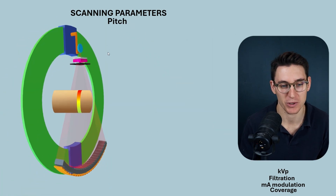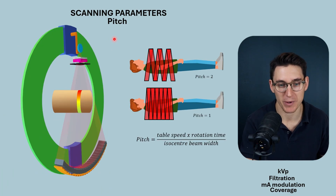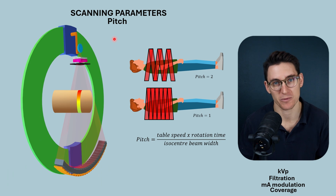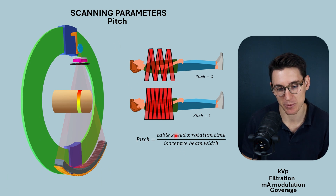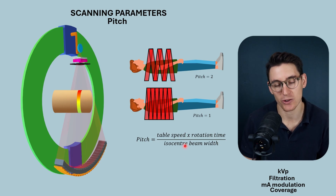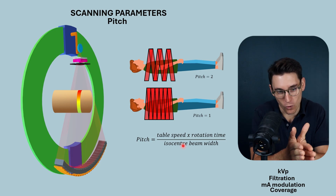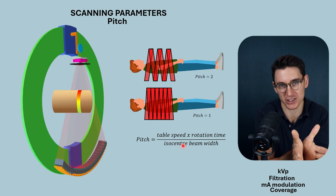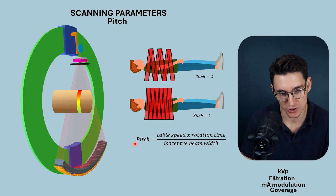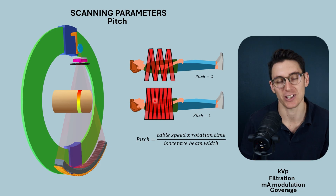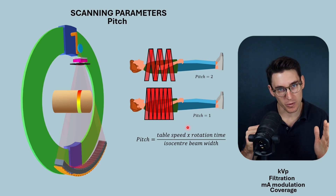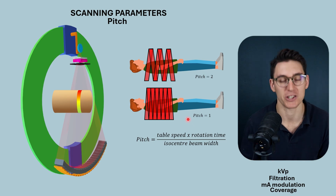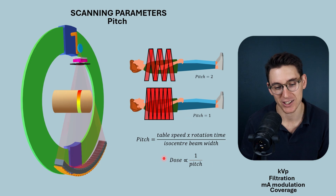Next, we're going to look at pitch, which we covered in the previous talk. Pitch is related to the rate at which the patient moves through the CT scanner — the table speed — as well as how fast the x-ray source is rotating around the patient and the beam width. If we keep table speed and rotation time the same but increase the beam width, increasing coverage in the z-axis and increasing our cone angle, we would be exposing more of the patient to ionizing radiation per rotation, reducing the pitch. A reduction in pitch means an increase in dose.